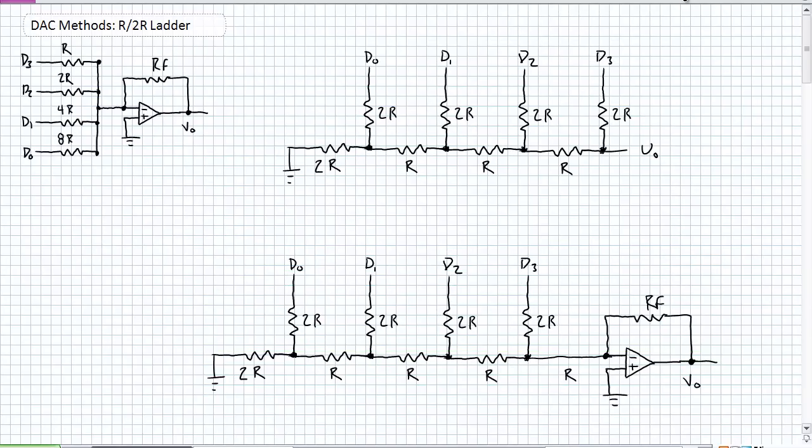In our last discussion about digital to analog conversion, we made use of the binary weighted input circuit, which I've drawn right here. As easy as it was to understand the binary weighted input circuit, there becomes a problem with it because notice those resistors: R, 2R, 4R, 8R.